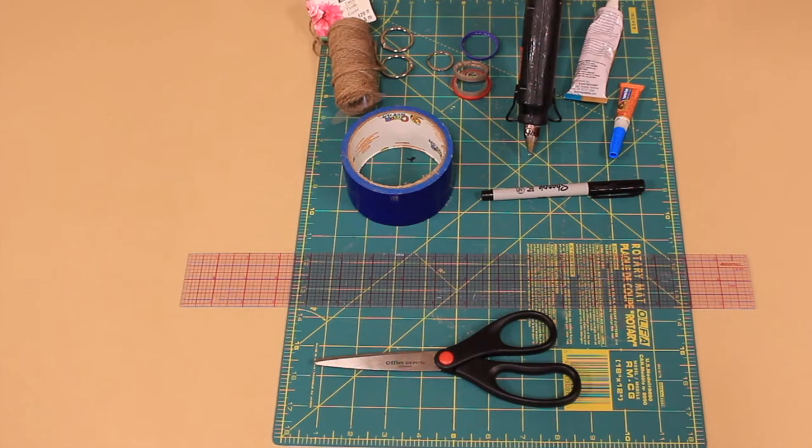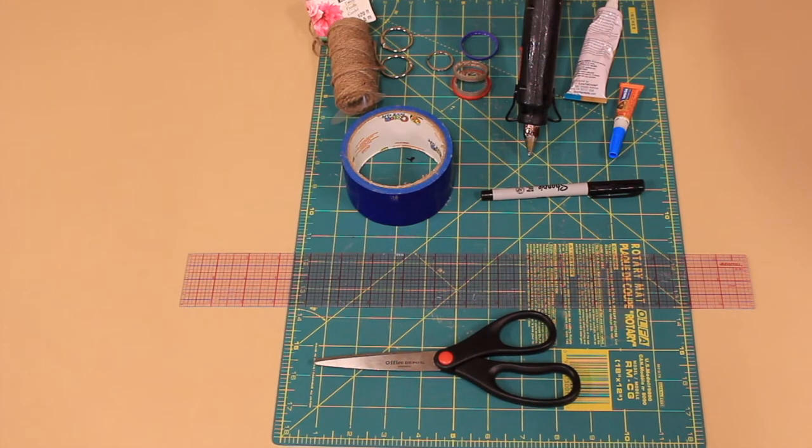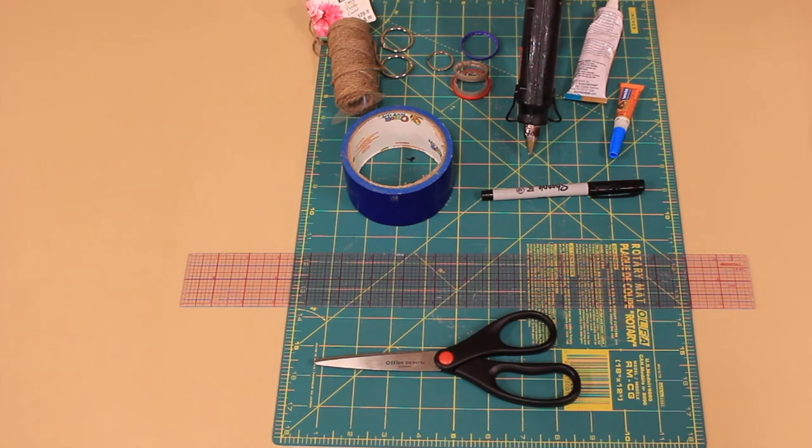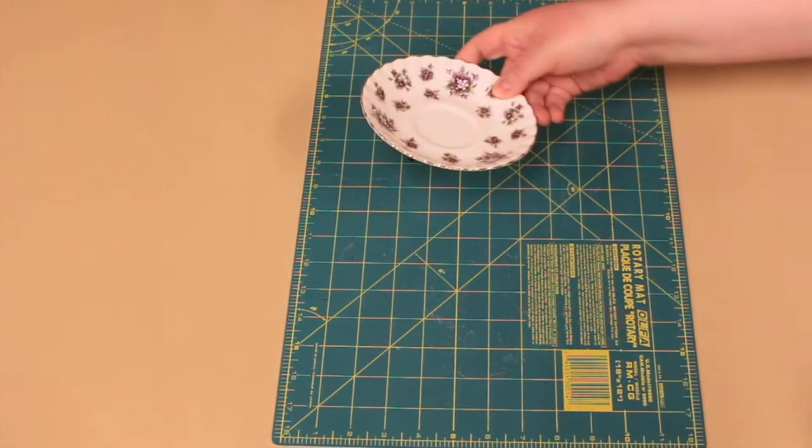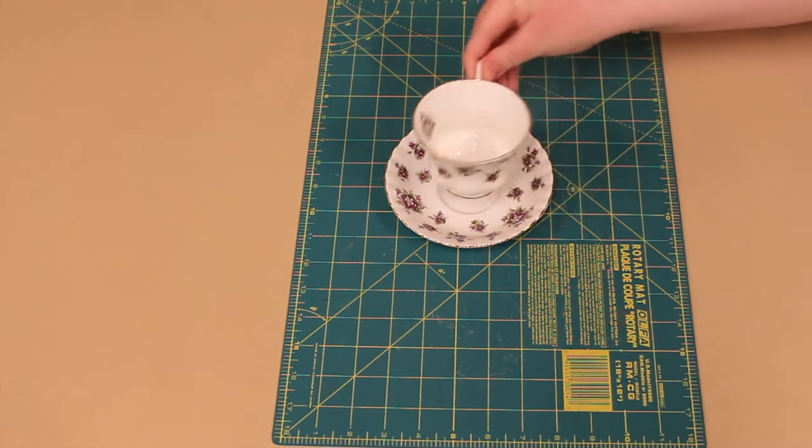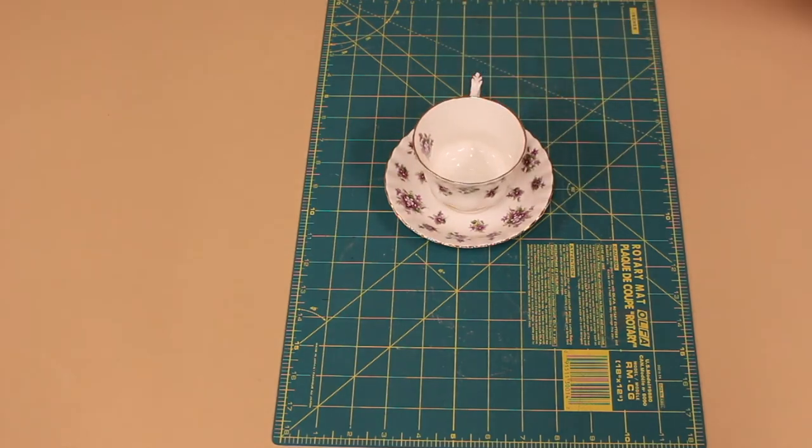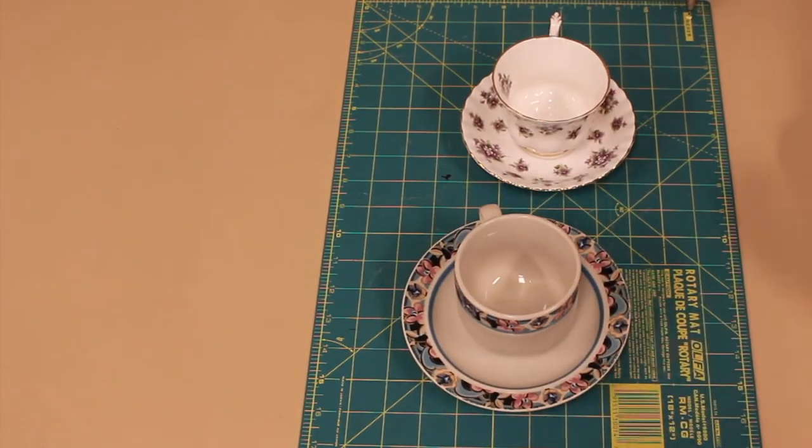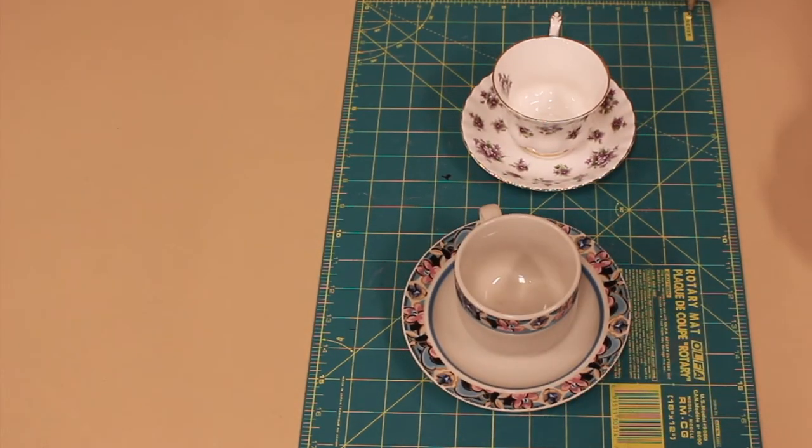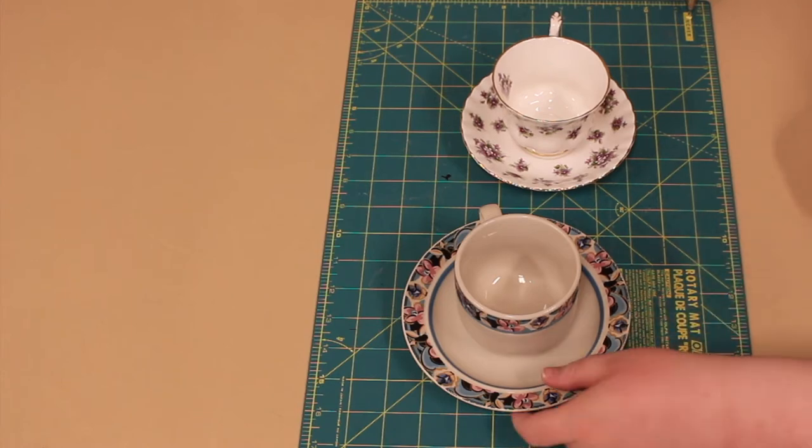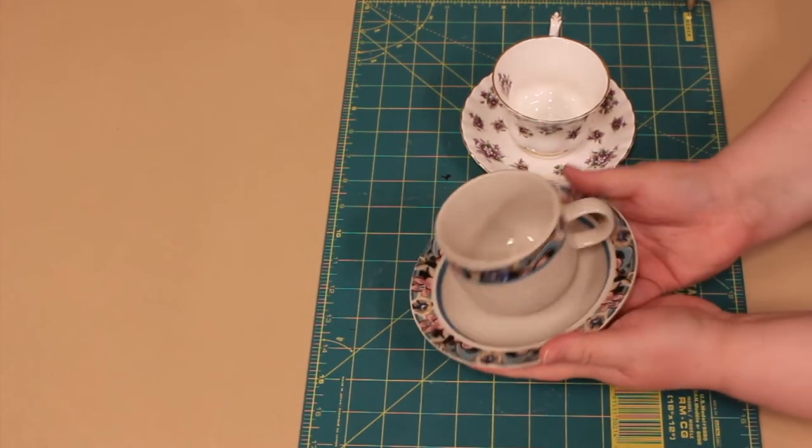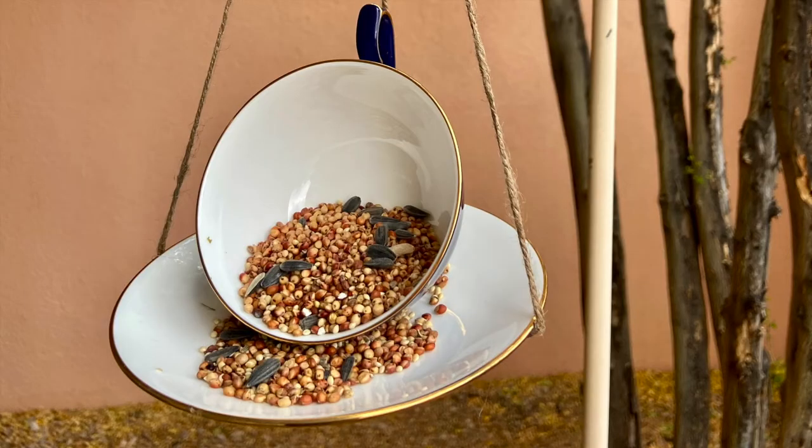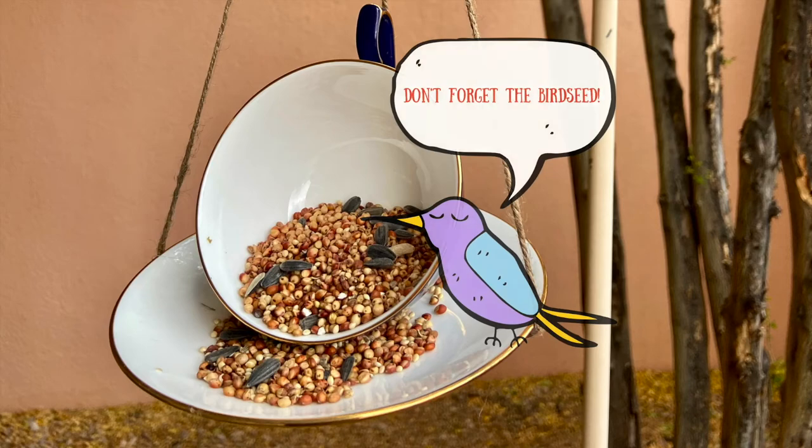You also need twine. Preferably something thicker and stronger. I chose a nice burlap twine for this project. Of course, you need a teacup and saucer. Perhaps you have an old set collecting dust somewhere, or maybe one has a small chip and you can't use it. This craft is the perfect way to give the item a new life. Plus, birds get to enjoy it, so it's a win-win in my book. Finally, don't forget the bird seed!